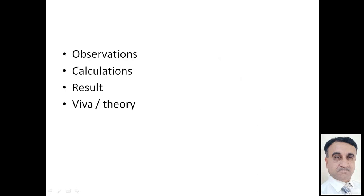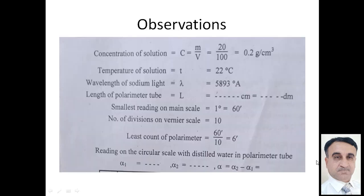Observations include first of all we will find concentration of the solution by measuring mass of the sugar and volume of the distilled water. After mixing the measured mass of sugar with the volume of the distilled water we can find concentration C of the solution.